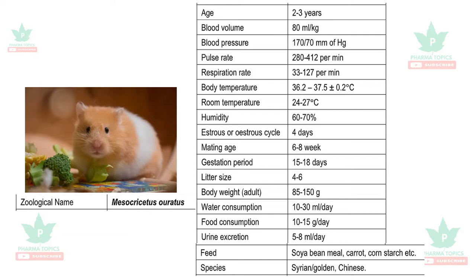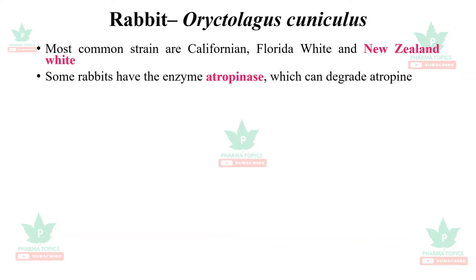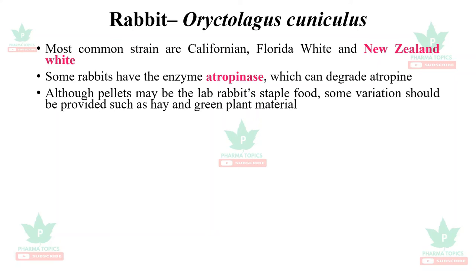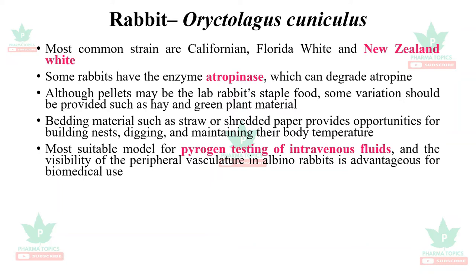The rabbit, Oryctolagus cuniculus, has common strains including Californian, Florida White, and New Zealand White. Some rabbits have the enzyme atropinase, which can degrade atropine. Although pellets may be the staple food, some variation should be provided such as hay and green plant material. Bedding materials like straw or shredded paper provide opportunities for nesting and digging. The rabbit is the most suitable model for pyrogen testing of intravenous fluids, and the visibility of peripheral vasculature in albino rabbits is advantageous for biomedical use.